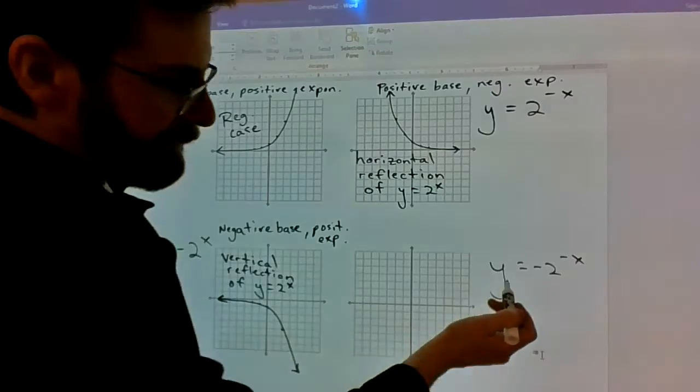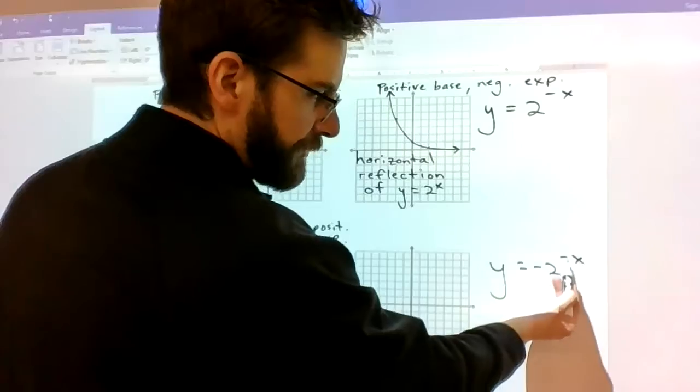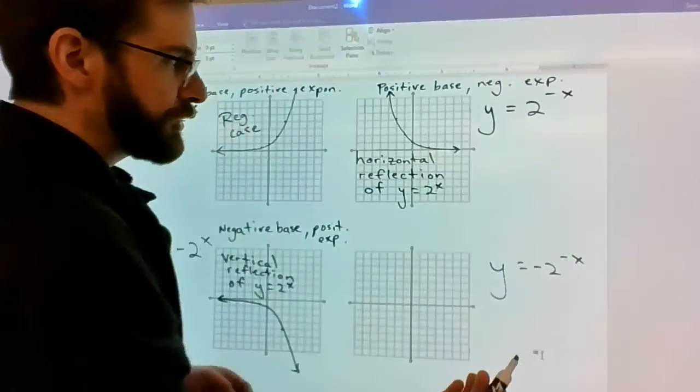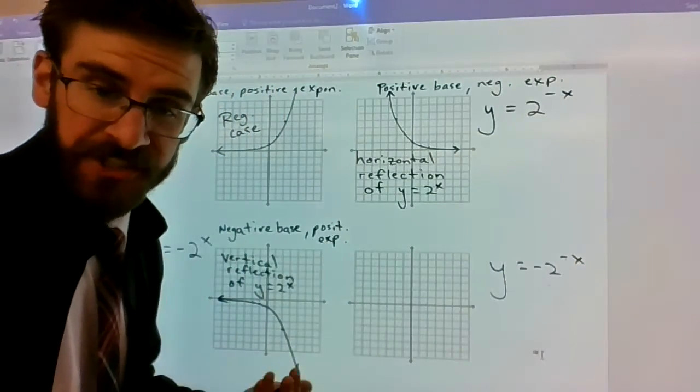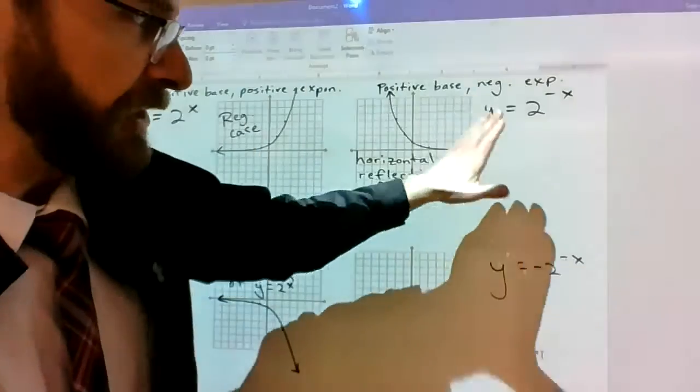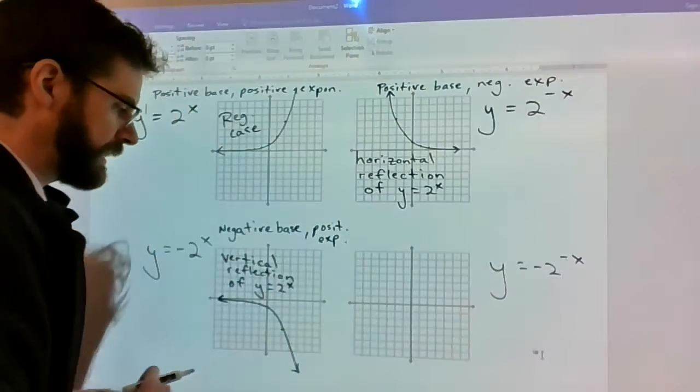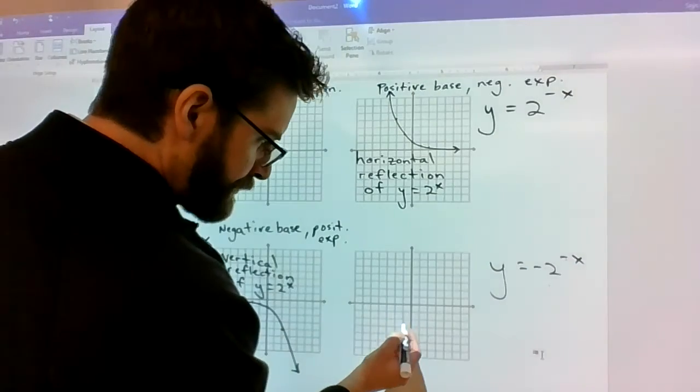So then if you put a negative in front of your base and a negative in front of your exponent, you're just going to have both of those reflections happening at once.